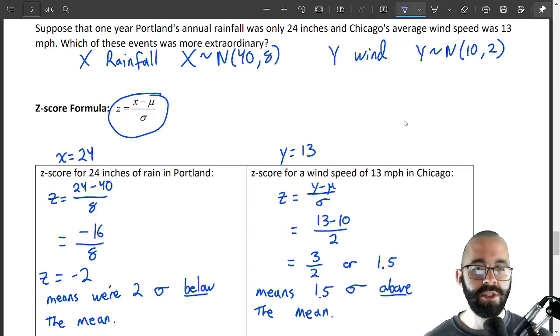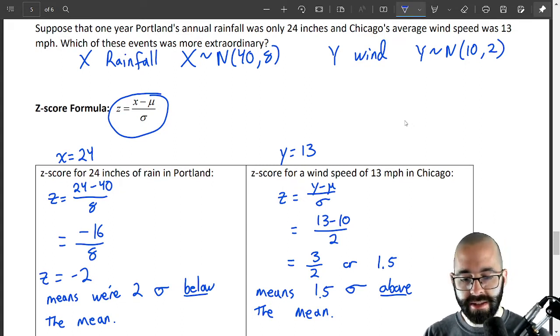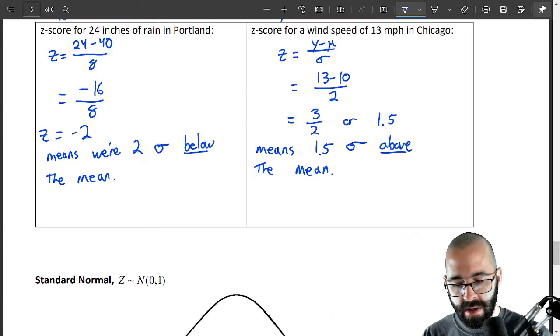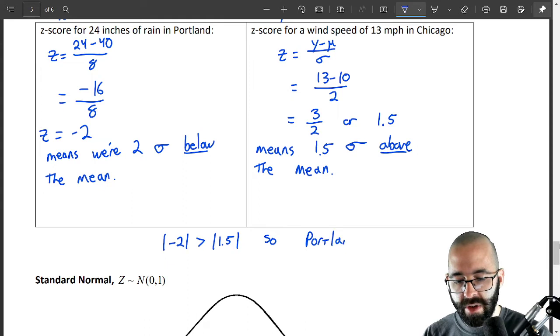Being 2 standard deviations away is more than being 1.5 standard deviations away. So the Portland case is less likely, Portland case is more rare. The absolute value of negative 2 is bigger than the absolute value of 1.5. The Portland situation is more rare.